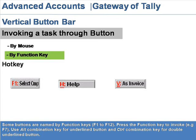For example, F7. Use the alt combination key for an underlined button, and the control combination key for a double underlined button.